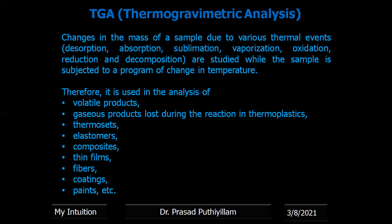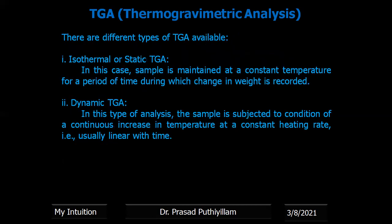Therefore, TGA analysis can be used for volatile products, thermoplastics, thermosets, elastomers, composites, thin films, fibers, coatings as well as for paints.